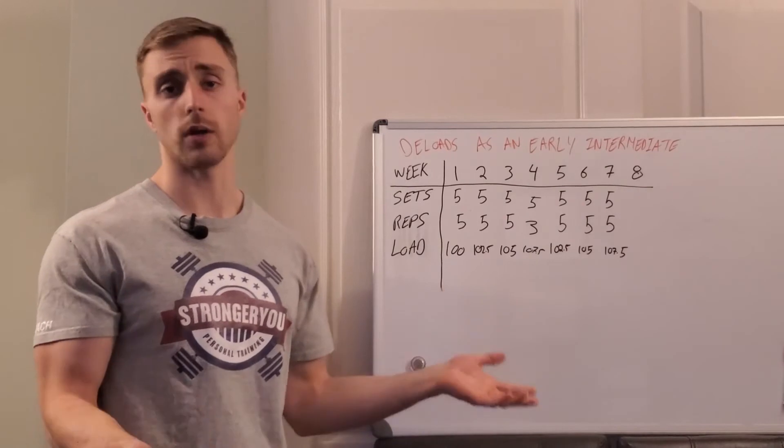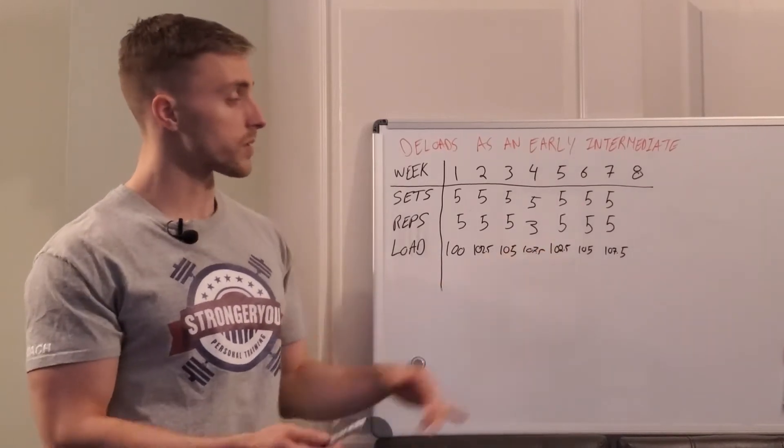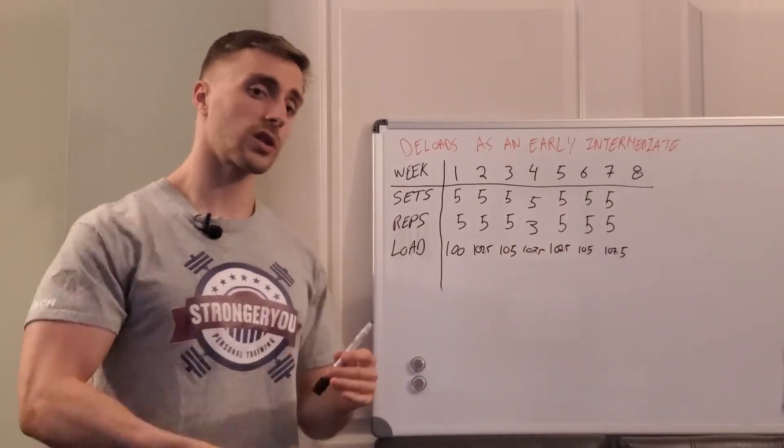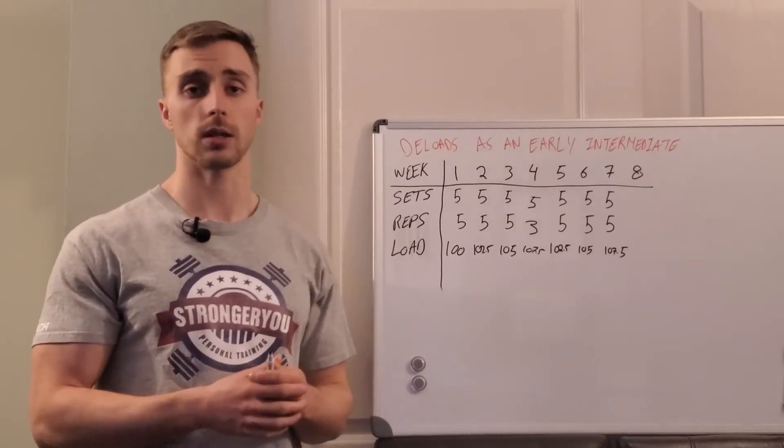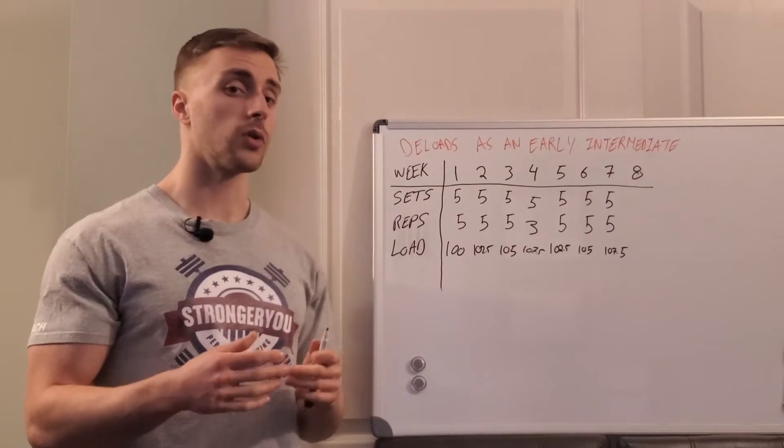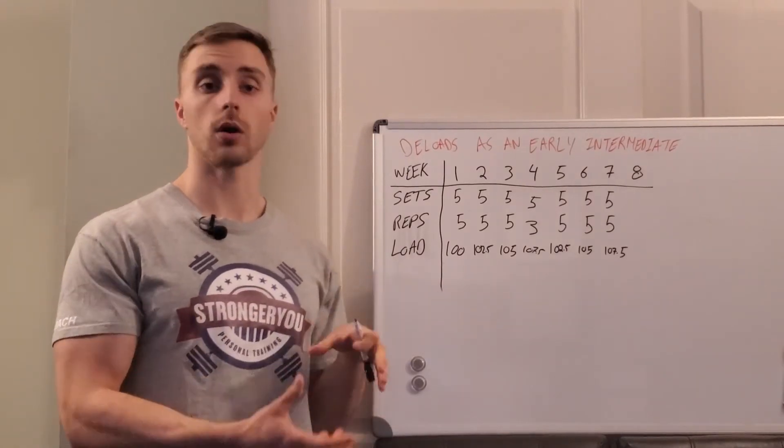...and let's say it's an RPE nine or one rep in reserve, going up to 107.5 for triples is probably actually going to be a little closer to about a seven or an eight RPE for you, so two or three reps in the tank.